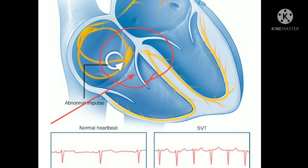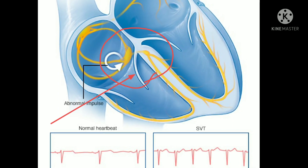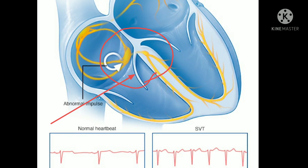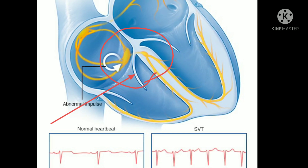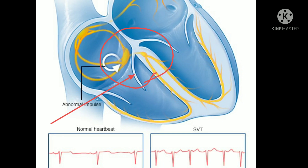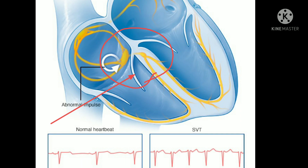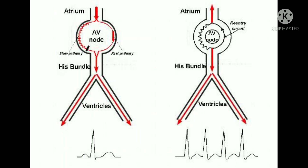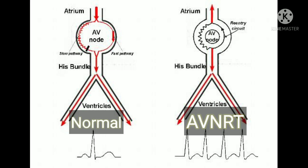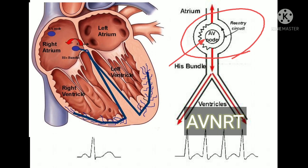If there is dysfunction of the AV node, an abnormal impulse is generated, causing repeated re-entry. This re-entry causes supraventricular tachycardia — extra beats are generated. Here we compare the normal pathway in a normal individual versus AVNRT. You can see the re-entry circuit marked here, which causes additional impulses and re-entry tachycardia. These tachycardias are also visible on ECG.